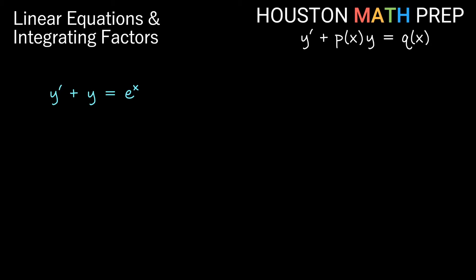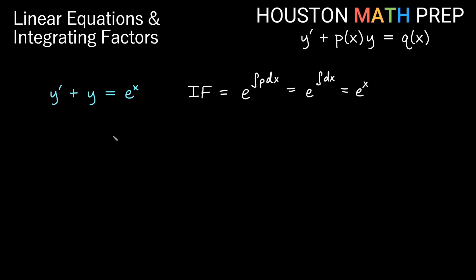Let's work a couple of examples. We have y' plus y equals e^x. This is already in normal form — q(x) is e^x and p(x) is 1. The first step is to find the integrating factor: e to the integral of p dx equals e to the integral of 1 dx, which is e to the x. So we multiply both sides of the entire equation by e^x.